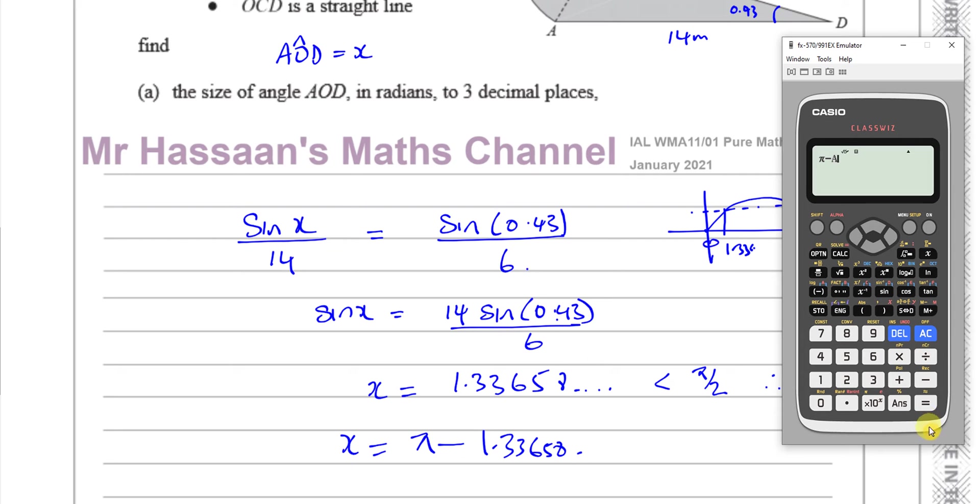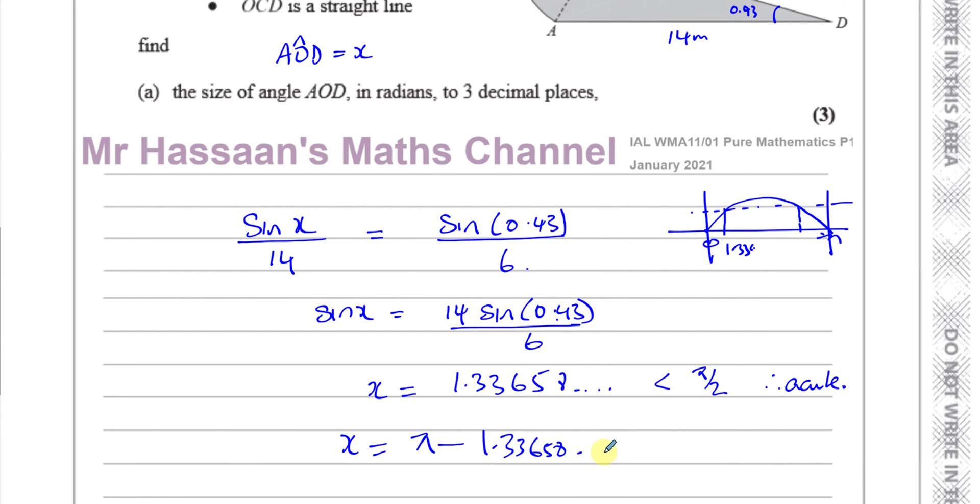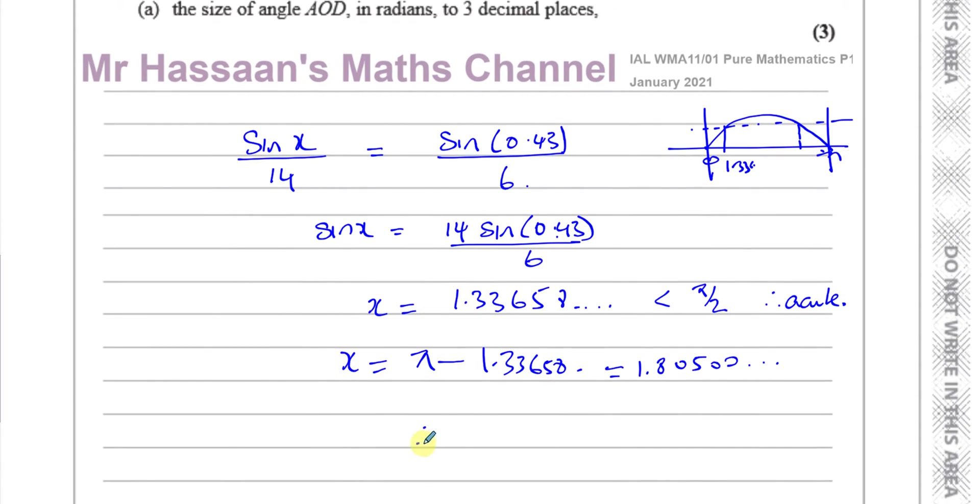So, I'm going to get it back, pi minus the angle, and that will give us an angle which is obtuse. As you see, it's more than 1.5, so it's more than 3.142. So, this is 1.805. We want it to three decimal places. So, 1.805 to 3 decimal places. Therefore, the angle AOD is equal to 1.805 radians. So there's the answer for part A.